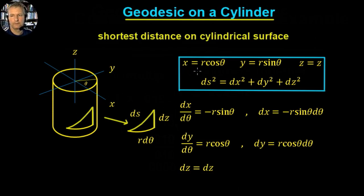The x component, given theta, is going to be r cos theta. The y component is going to be r sin theta. And the z component is just going to be the z value.